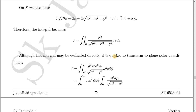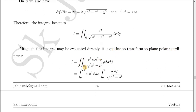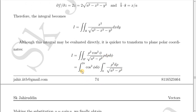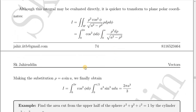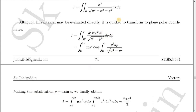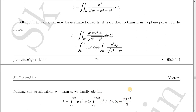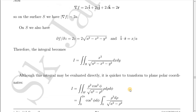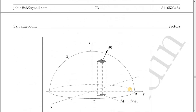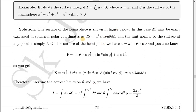It is quicker to transform to plane polar coordinates (ρ, φ) in the xy-plane. The integral becomes I = ∫₀²π ∫₀ᵃ ρ² cos²φ / √(a²−ρ²) · ρ dρ dφ. Substituting ρ = a sin u and evaluating gives the same answer, 2πa³/3. For general surface integral problems: if the surface is symmetric like a hemisphere, use the spherical polar formalism; for complicated surfaces, use the general Cartesian prescription.